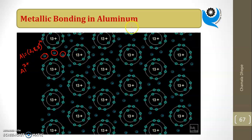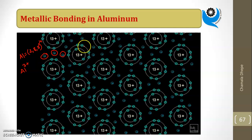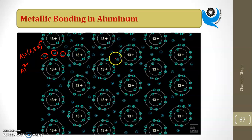Metallic bond is formed due to the electrostatic attractive force between the positively charged kernel and the negatively charged valence electrons. There is continuous attraction everywhere — valence electrons can attract from anywhere — and a continuous bond is formed. That is the metallic bond which forms aluminium. Everywhere there is an aluminium atom, and these valence electrons form the sea of electrons.